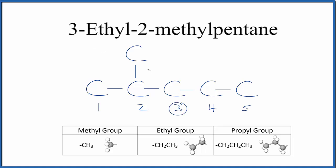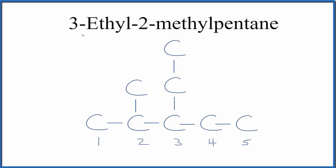Now on the third carbon right here, we're going to put an ethyl group. An ethyl group is two carbons single bonded. That looks like this. So this is the structure for 3-ethyl-2-methylpentane.